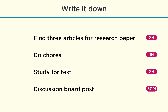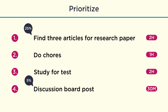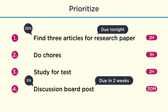You now need to figure out which tasks to tackle first. This is called prioritizing. Prioritizing involves deciding how important and how urgent each task is. Usually when it comes to school, the important tasks are worth the most — for example, a 25% paper would be more important than a discussion board post worth 5%. Urgent tasks are due the soonest; for example, the assignment due tonight is more urgent than the assignment due in two weeks.